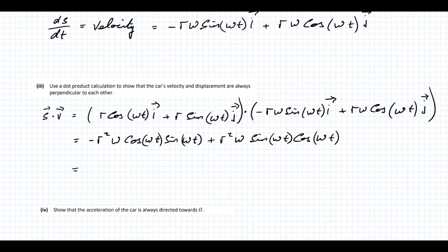When you look at these, you can see that they just give you zero when you add them. This is minus R squared omega cos omega T sine omega T, and this is the plus version of it, so we just get zero. This means the S displacement vector is perpendicular to our velocity vector.